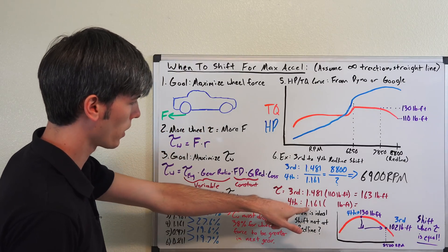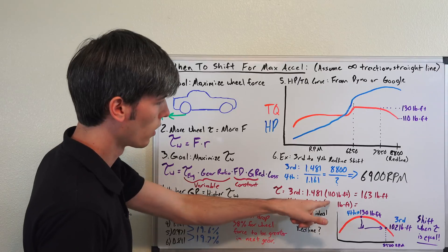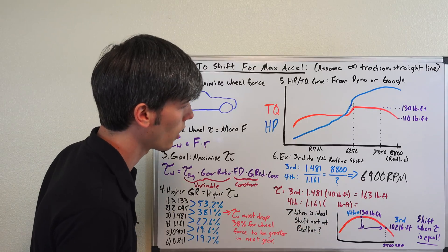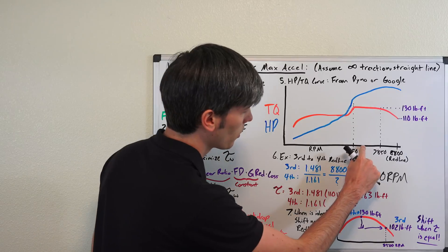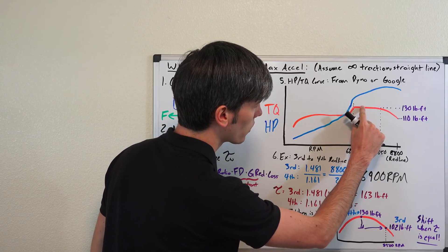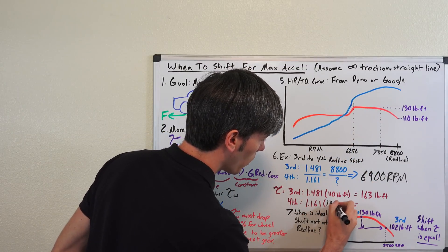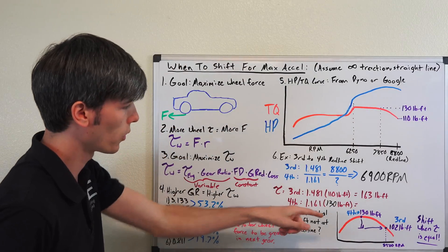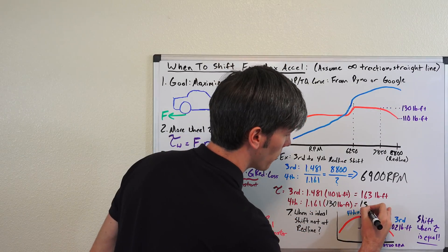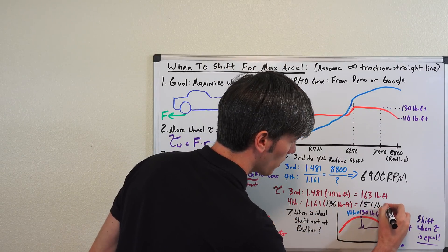Now in fourth gear, with a gear ratio of 1.161, we are going to be at 6900 RPM. So that's going to be somewhere in this range right here, as you can see that's going to be about 130 pound-feet. So we'll put in 130 pound-feet right there, multiply that across, and that gives us about 151 pound-feet.